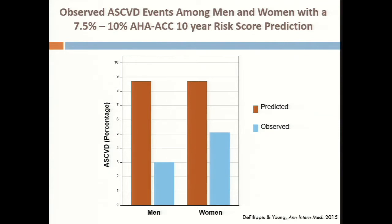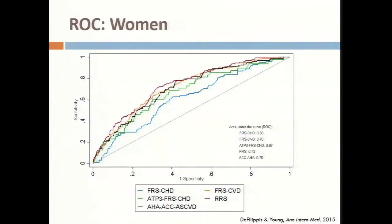All the scores were overestimating risk substantially. If you look at the guideline-recommended risk score at the calculated risk of 7.5% to 10%, where physicians make the balance of whether to prescribe aspirin or a statin, and compare that to the actual observed event rate in those individuals in the MESA study, the observed rate in men and women was substantially lower, well outside of the 7.5% to 10% range. On discrimination, all scores performed about the same — the new risk score was not outperforming others, and certainly was not well calibrated.